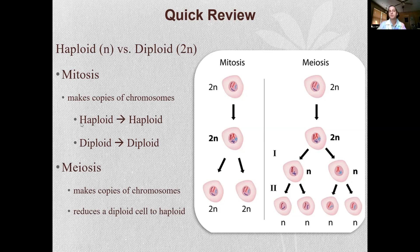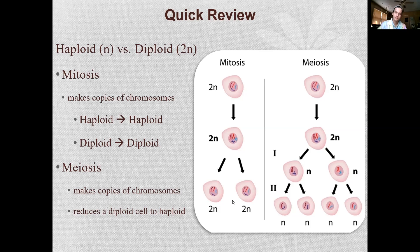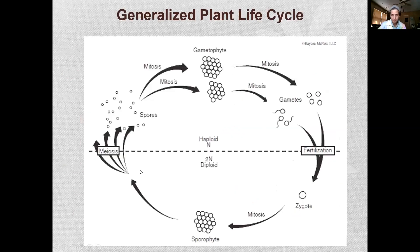In mitosis: if you start with haploid you wind up with haploid; if you start with diploid you wind up with diploid. In meiosis, you're reducing a diploid cell to a haploid cell.